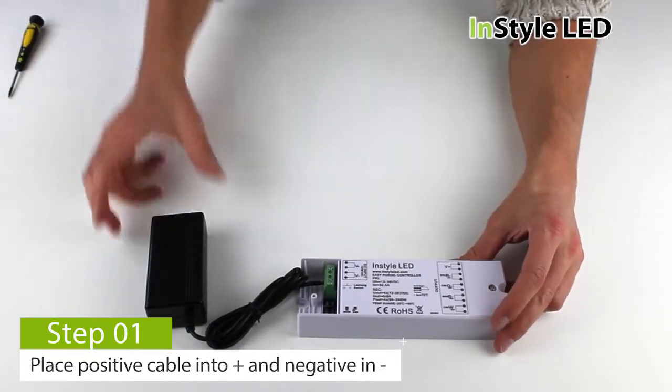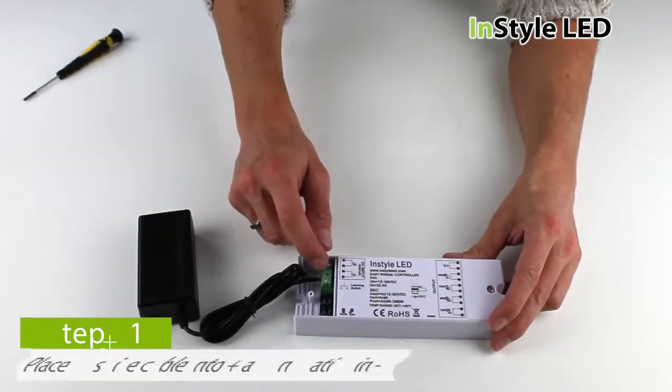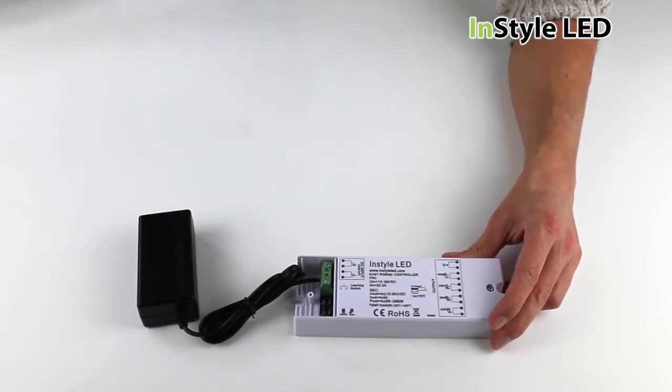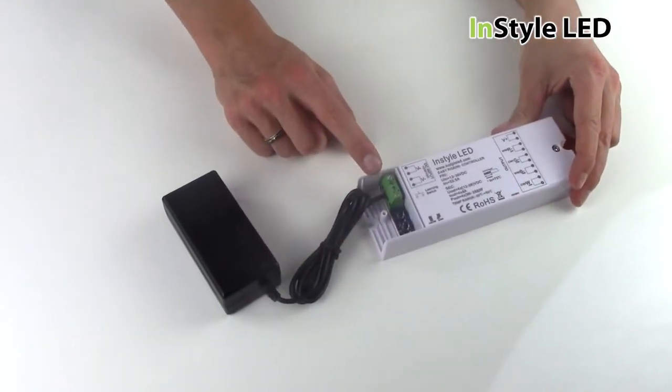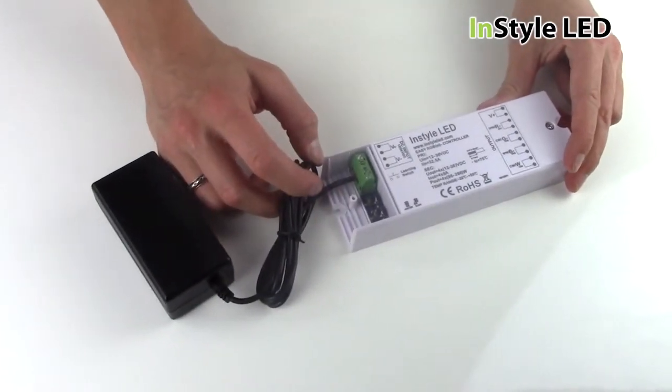Firstly take your transformer and wire the positive into the input plus and the negative cable into the input minus. The positive cables will either be red or brown and the negative cables can either be blue, black or white.